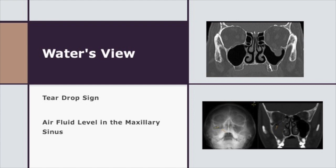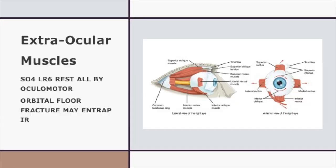Before we move further, let us revisit the anatomy of the extraocular muscles. We have seven extraocular muscles: levator palpebrae superioris, the four recti — superior, inferior, medial, and lateral — and two obliques. The superior oblique is supplied by the fourth cranial nerve, the lateral rectus by the sixth cranial nerve, and every other muscle is supplied by the third cranial nerve. Whenever the orbital floor is fractured, it may cause entrapment of the inferior rectus. To diagnose inferior rectus entrapment, you ask the patient to look up — the affected side will not be able to look up.